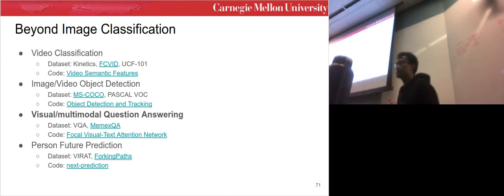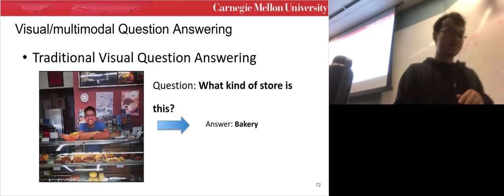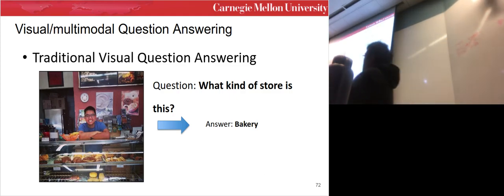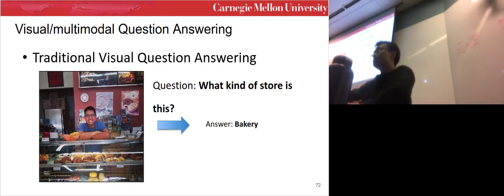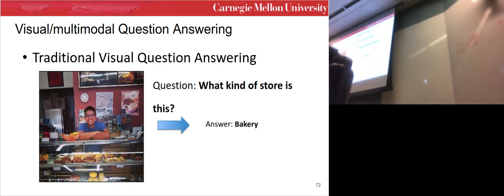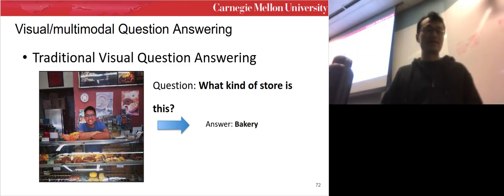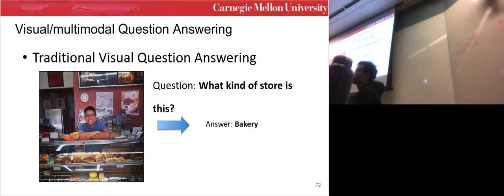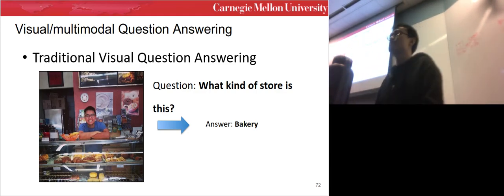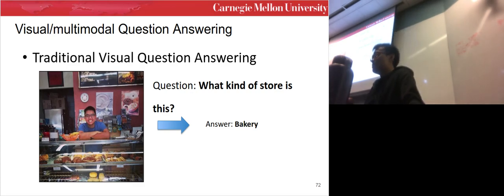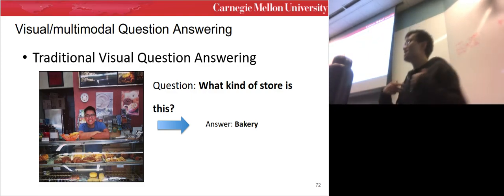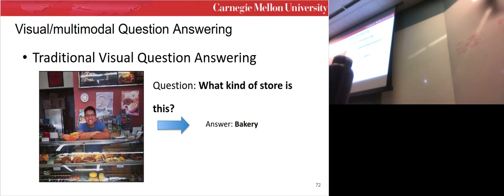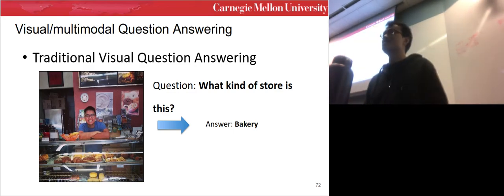Moving on to multimodal question answering. Visual Question Answering (VQA) is a popular task: given an image and a question like 'what kind of store is this?', the model must output 'bakery'. However, traditional VQA has limited practical utility — you wouldn't ask Siri 'what kind of store is this?' for a random photo. So we propose a more real-world question answering task based on personal media photo albums like those on Flickr, where people group photos into collections with descriptions, titles, and timestamps.